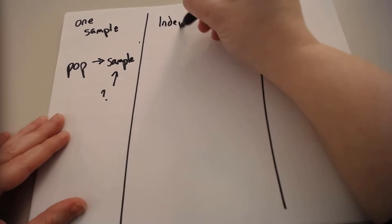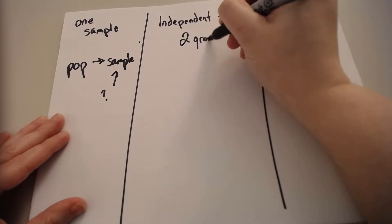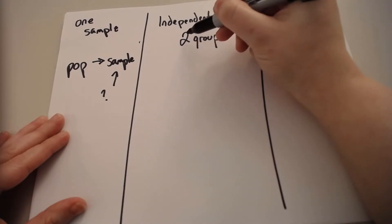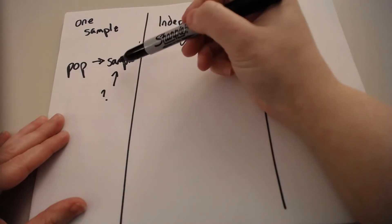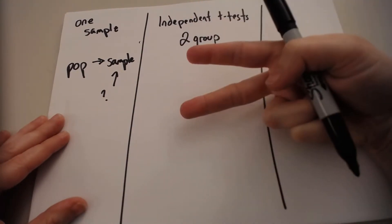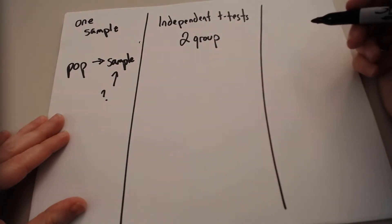We also have independent t-tests. This is where there are two groups. I remember this because t-tests study two things, either a population and a sample, two groups, or in what you'll see in a second, two measurement points, but we're always talking about two. If there's more than two, then it's a different kind of statistical test.